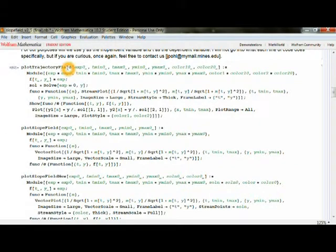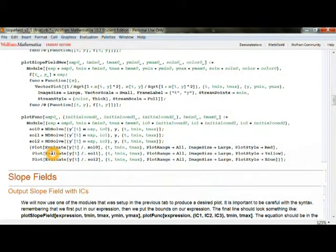For example, plot trajectory field. We can set that equal to a module. Now this takes in variables that we've arbitrarily defined: Y min, Y max, and so on. Then that module repeats itself and runs those various functions that we've told it to. One such example is making a stream plot, and that's one that we'll show later. Another is plot slope field, which uses a vector plot. There's also a plot function. These modules take in certain conditions as a function and then does this loop with it, similar to a do loop.